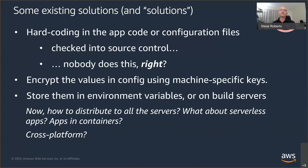Traditionally with .NET applications, we would store secrets in app settings and connection strings in the app config or web config files, and do transforms on them at build time to get different credentials for different environments. We'd encrypt them using machine keys. That worked okay for traditional monoliths running on a limited number of servers, but those keys still end up in your source code repository, and when you decide to open source — guess what happens? Also, updating a secret meant hand-editing all those files on the servers.